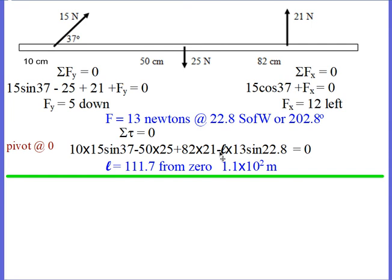You could make the assumption about direction and solve the problem and come up with a negative value for L, which would mean you need to locate the force on the negative side of your zero pivot. If you solve this for L, you do get a specific value.